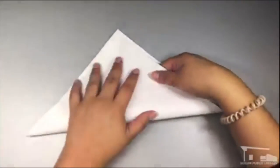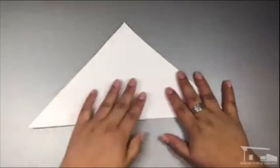To get started, we'll need a square of paper. Fold your square in half from corner to corner making a triangle. Open it up and fold the opposite corners together, forming an X in the center of your square.